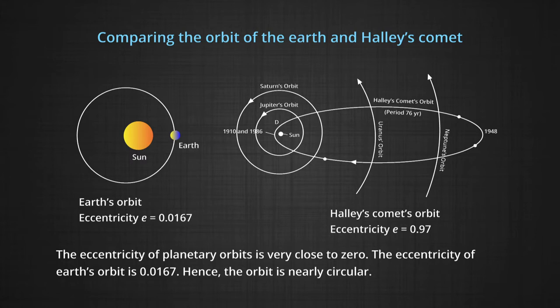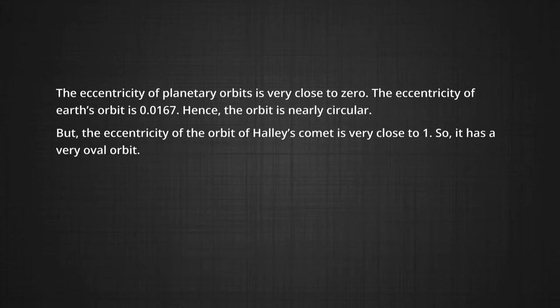The eccentricity of Earth is only 0.0167, hence the orbit is nearly circular. But the eccentricity of the orbit of Halley's comet is very close to one, so it has a very oval orbit.